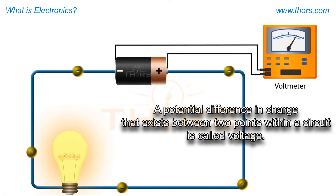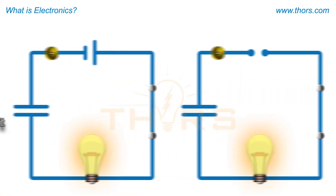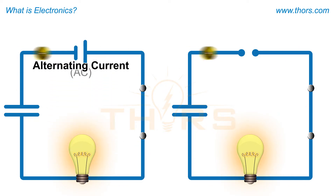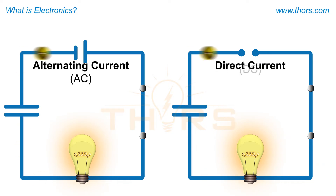Voltage, the potential difference in charge that exists between two points within a circuit, is necessary for the movement of electrons in a circuit to produce current or electric current. Electric current can be alternating current, or AC, and direct current, or DC.